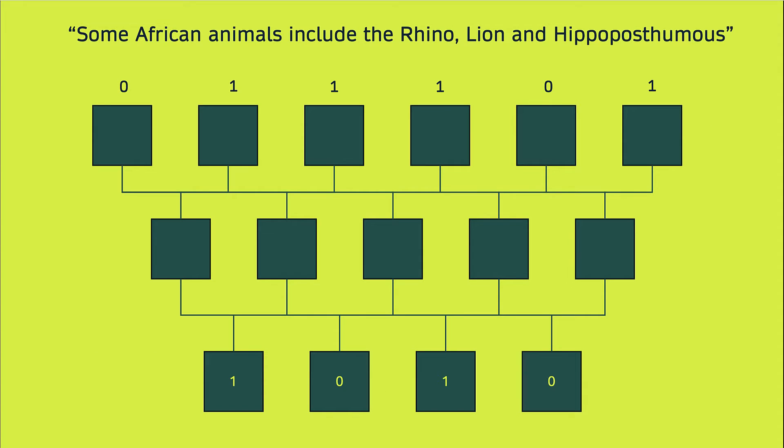So I mentioned that computers are good at numbers. So if we gave an AI a bit of text, like some African animals include the rhino, lion, and hippopotamus, then it needs to really understand. And then if we trained on similar bits of text, it would need to understand the patterns. And to do that, it needs to convert those things into numbers.